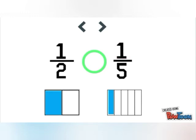As compared to one half, that means 1 upon 2 is greater than 1 upon 5. Let's take another example. Here we have 1 upon 6 and 1 upon 4.